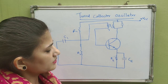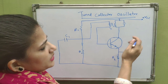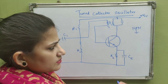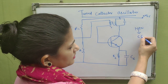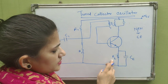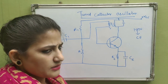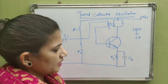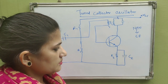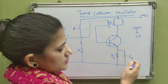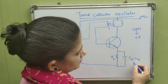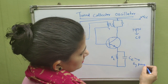The different parts of the tuned collector oscillator are: first, the NPN transistor in common emitter configuration. The emitter resistance RE provides bias stabilization of the Q point. If RE is not included, the Q point will not be stable.